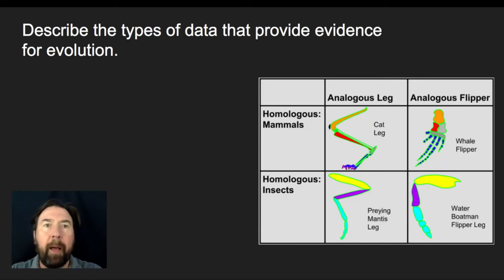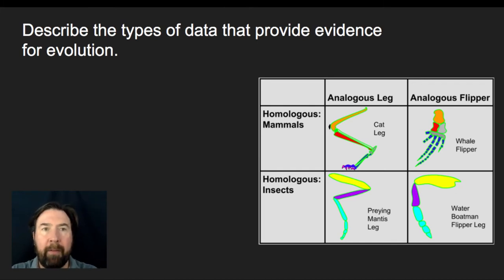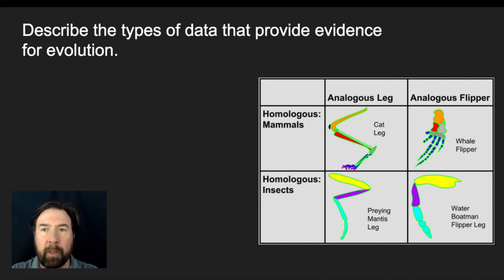First up, we're going to describe the type of data that provides evidence for evolution. There are lots of different types of evidence. Historically speaking, it was just physical things — literally things like the anatomy of structures.